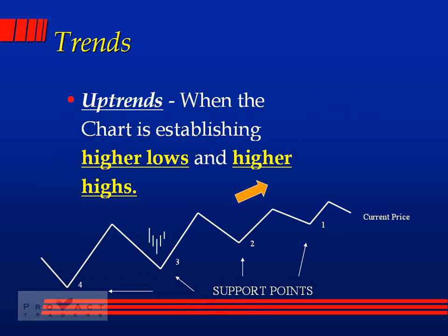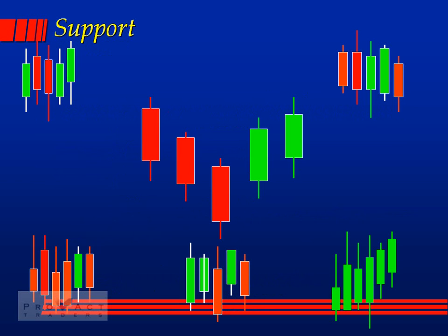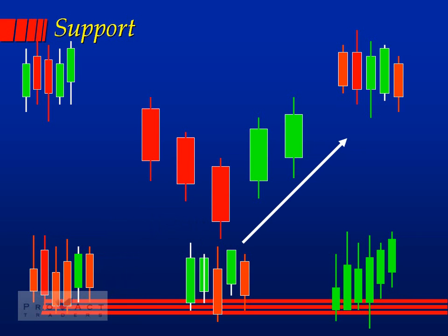In an uptrend the chart is establishing higher lows — you see points four, three, two, one — and also higher highs. Those low points are support points. Support is defined — Tom DeMark did it best — as one candle that is lower than the candles on its left and right. If you have one candle on each side you have strong support; if you have two candles on either side you have extremely strong support. It's best to trust extremely strong support.